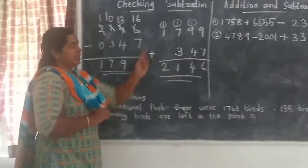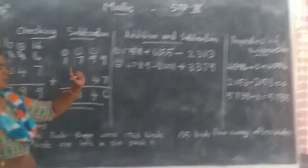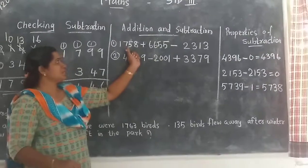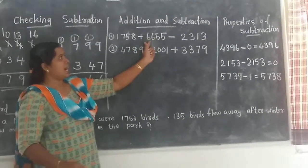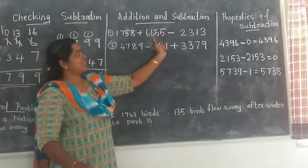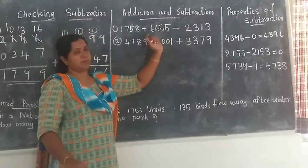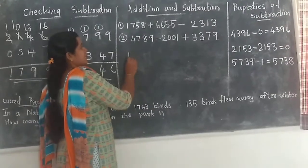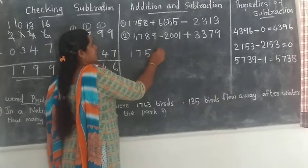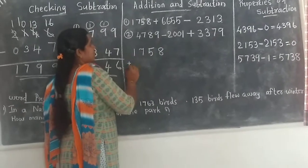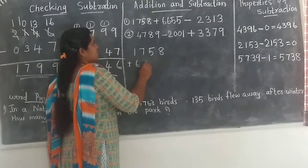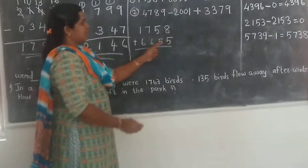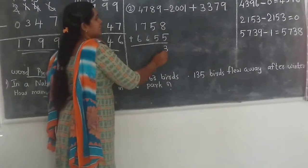Next, addition and subtraction. We have the number 6655 and we subtract from it. Now we add — turn to the ones place: 5 plus 8 is 13. Write 3, carry 1. Then 5 plus 5 is 10, plus the carried 1 gives 11. Write 1, carry 1.